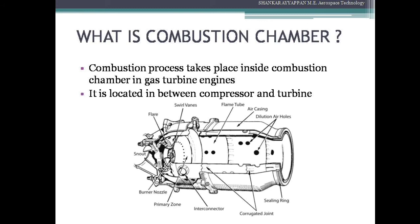There are some basic components inside the combustor. The first one is the snout, which is a passage where the primary air enters into the combustion chamber. Then we have swirl vanes, which are used to create turbulence of the inlet air to mix the fuel with air. Then there are interconnectors, which are used to connect two or more cans or combustion chambers. Then there is the primary zone, where maximum temperature takes place and the initial combustion process starts. Then we have the flame tube, which is the inner chamber where the real combustion occurs. Then we have the air casing, which is used to supply secondary air and tertiary air for cooling and dilution purposes.